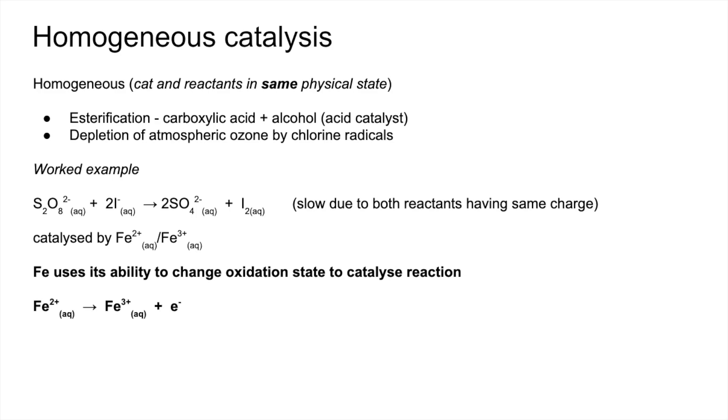So just the half equations before we go into the detail. Iron 2 plus ions can lose an electron and form Fe3 plus. And the opposite can happen. Iron 3 plus can gain an electron and form iron 2 plus.